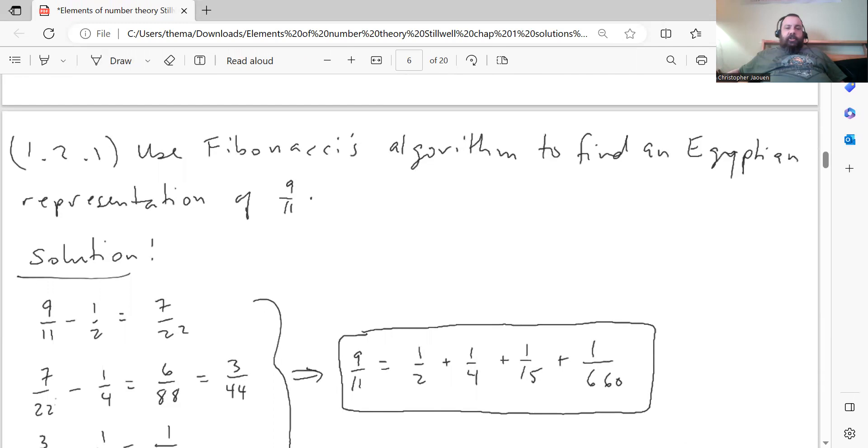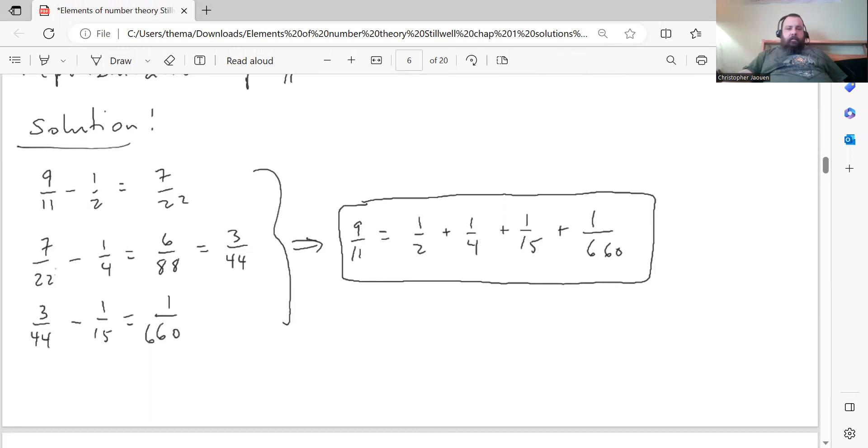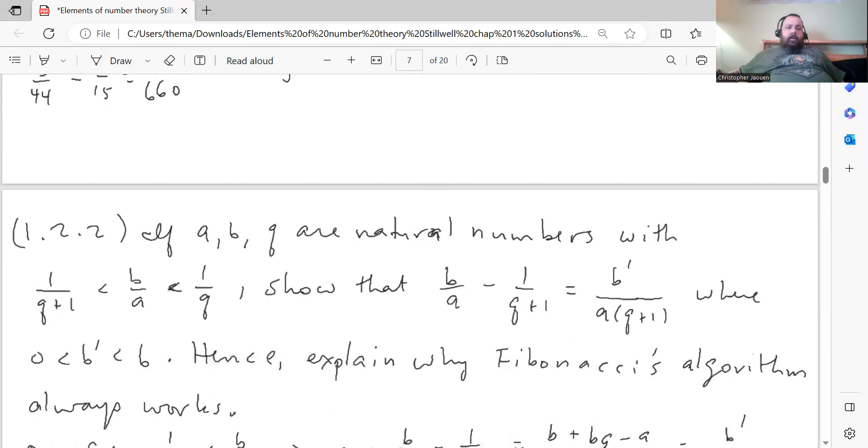The fractions produced by the successive subtractions always have a descending sequence of numerators. In the example we just did, the numerators went from 11 to 5 to 1, hence they must necessarily terminate with 1. Use Fibonacci's algorithm to find an Egyptian representation of 9 over 11. So 9 over 11, you can subtract a half from it, which gives you 7 over 22. From 7 over 22, you can subtract a fourth, which gives you 6 over 88, which you can reduce to 3 over 44. Then you can subtract 1 over 15 from 3 over 44, which itself gives you a unit fraction, 1 over 660. So 9 over 11 equals a half plus a quarter plus 1 over 15 plus 1 over 660.